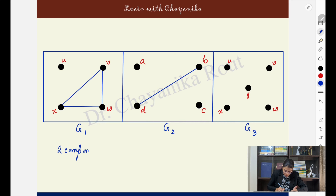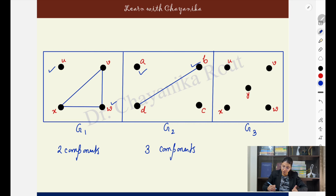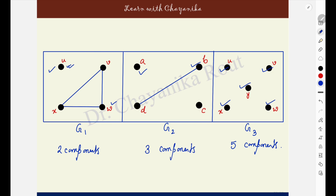G1 is a connected graph with one component. G1 in the next example has two components and is a disconnected graph with no path between u and w. G2 is also a disconnected graph with no path between a and b, having three components. G3 has five components. A connected graph always has one component; a disconnected graph has at least two. Every isolated vertex — having degree zero — is itself a component, called a trivial component. For example, u in g1, and a and c in g2, are trivial components.